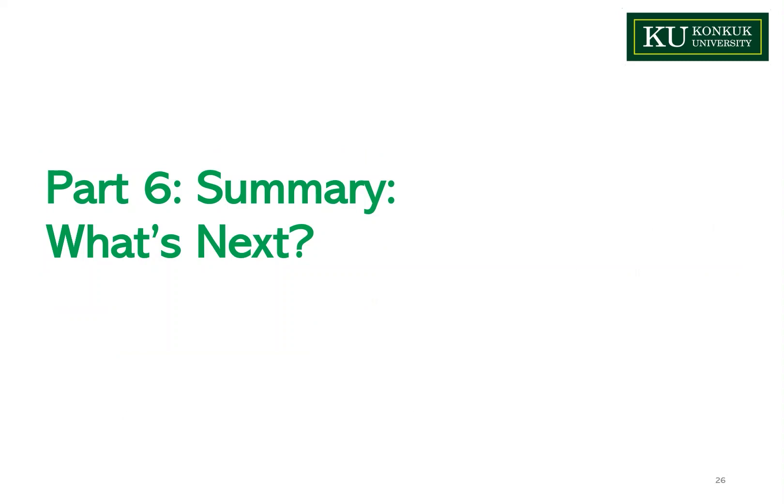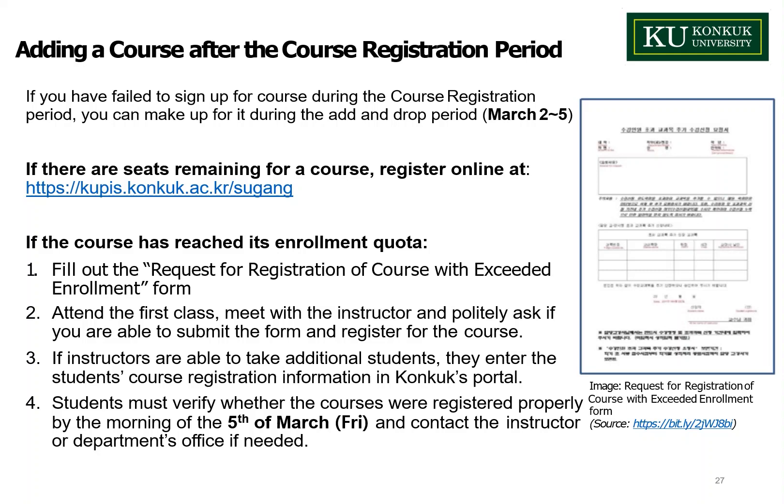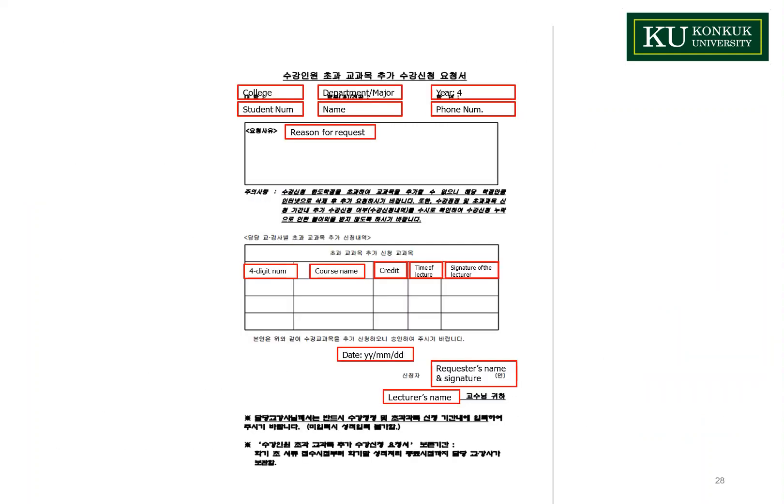This section is about adding courses after the registration period. If there are seats remaining, register online at the provided link. If the course has reached its enrollment quota, first download and fill out the request form for registration of a course with exceeded enrollment from Konkuk's website, then attend the first class and politely ask the instructor if you can submit the form. If the instructor can take additional students, they will enter the registration information in Konkuk's portal. Students must verify their registration by the morning of March 5th and contact the instructor or department office if needed.